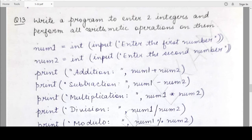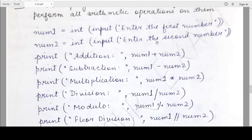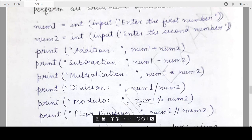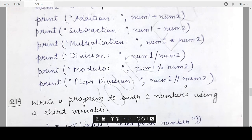Question number 13 asks you to take two integers from the user and perform all arithmetic operations on them. You store the two integer values in variables num1 and num2. Then you use six statements to print the results: addition (num1 + num2), subtraction (num1 - num2), multiplication (num1 * num2), division (num1 / num2), modulo (num1 % num2), and floor division (num1 // num2).